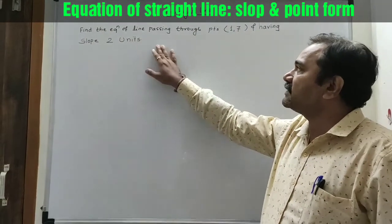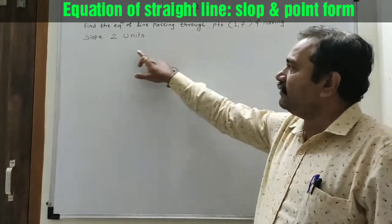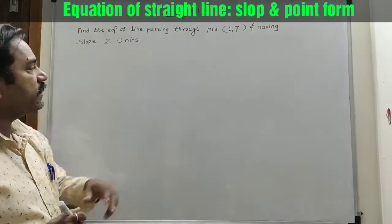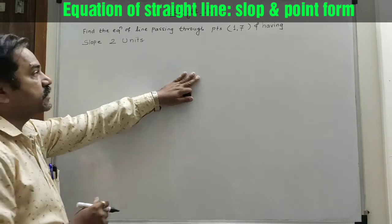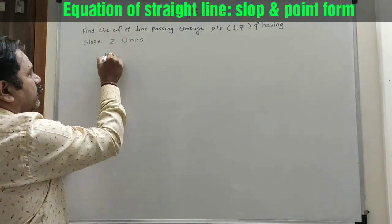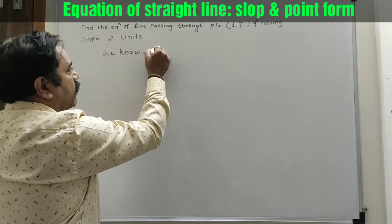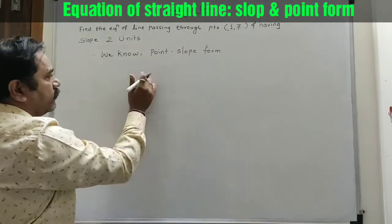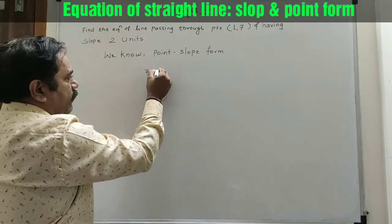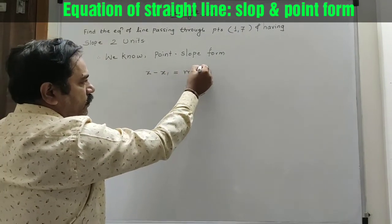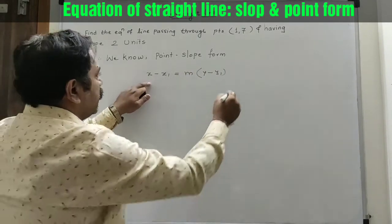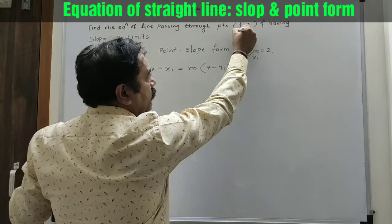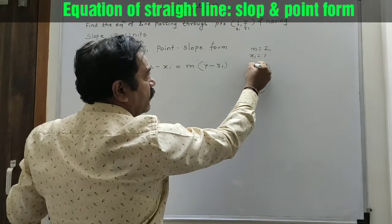Now here we will take one example on the basis of one point and one slope. We have to find the equation of a line passing through the point (1, 7) and having slope m equal to 2 units. We know the point-slope form. Here m equals 2, x1 is 1, and y1 is 7.